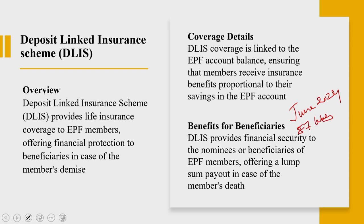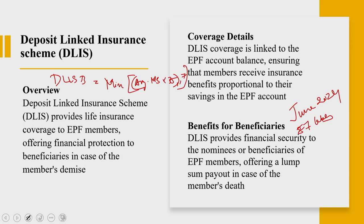The benefit formula is: DLIS benefit = minimum of (average monthly salary × 35) or 7 lakh. This formula ensures that the benefit amount is at least 35 times the average monthly salary, and it is subject to a maximum limit of 7 lakh.